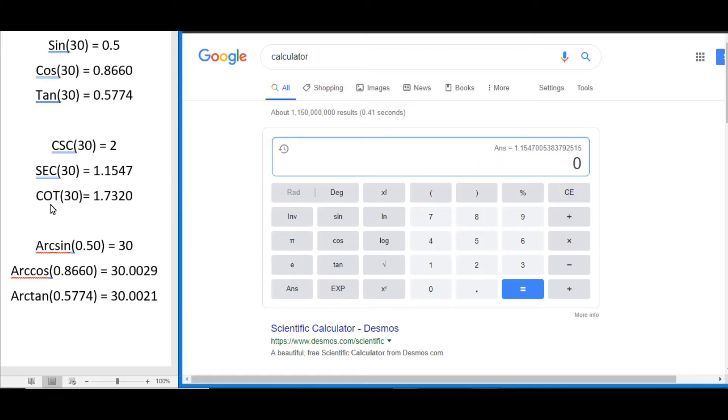And tangent of course is used for cotangent. So tan 30 equals, x to the power of y negative 1 equals, and we get a cotangent of 1.7320.